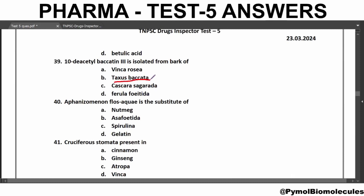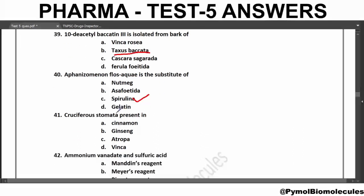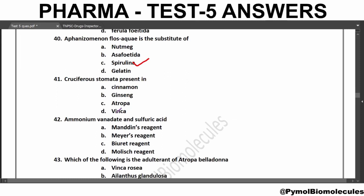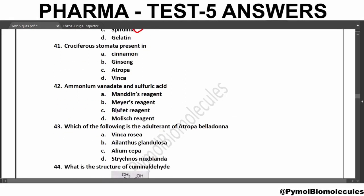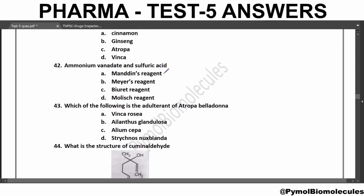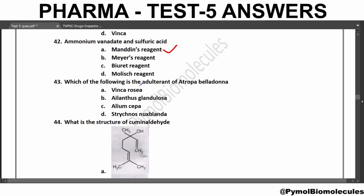10-Deacetyl-Baccatin-3 is isolated from the bark of Taxus baccata and it is a diterpenoid. Affanizomenon flos-aquae is the substitute of Spirulina and it contains nerve toxin. Cruciferous tomato is present in Vinca. Ammonium vanadate and sulfuric acid constitute Mandelin's reagent. Nux vomica turns purple due to the presence of Strychnine in Mandelin's reagent. The adulterant of Atropa belladonna is Ailanthus glandulosa; other adulterants are Phytolacca americana and Solanum nigrum.